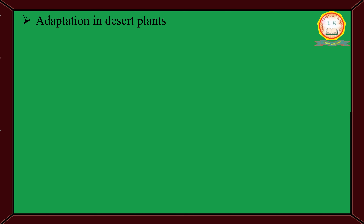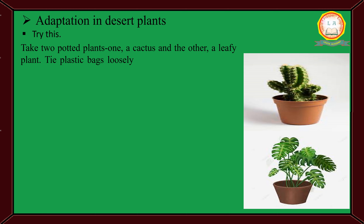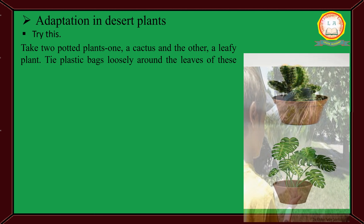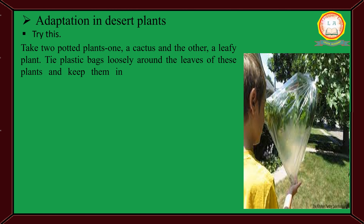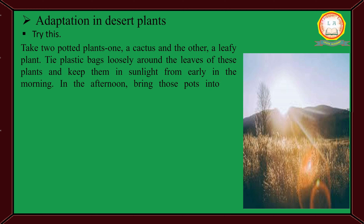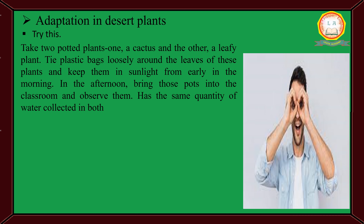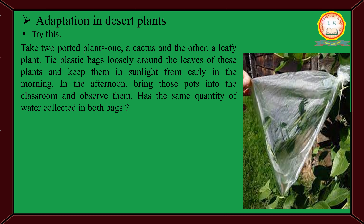Adaptation in Desert Plants. Try this: Take two potted plants, one a cactus and other a leafy plant. Tie plastic bags loosely around the leaves of these plants and keep them in sunlight from early in the morning. In the afternoon, bring those pots into the classroom and observe them. Has the same quantity of water collected in both bags?